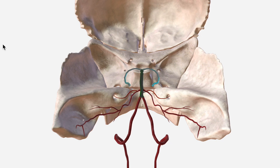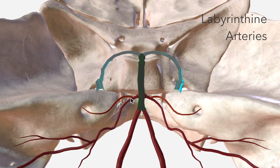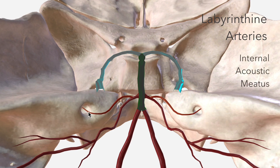Next, we have the labyrinthine arteries, which in most people depart from the AICA. In about 15% of the population, they'll depart from the basilar artery itself. These pass laterally to enter the internal acoustic meatus in order to supply the inner ear.